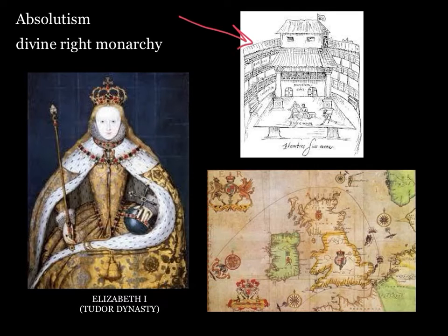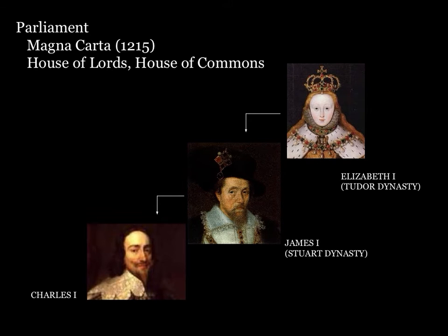Elizabeth chose not to marry, probably to maintain political power in her own hands — a very savvy move. But it meant that when she died, she had no direct heir. Upon her death in 1603, her dynasty — the Tudor dynasty — ended, and her second cousin became the new king of England, establishing the Stuart dynasty. When James became king of England, he had already been ruling as king of Scotland for several decades, and he came to England with a definite philosophy of how to rule: he had learned through Scottish experience that the way to rule effectively is with an iron fist.